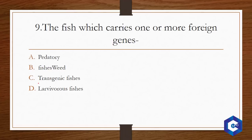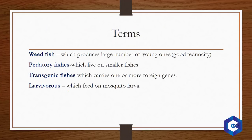A fish which carries one or more foreign genes is called a transgenic fish. Related terms: weed fishes are those which have a high fecundity — meaning they produce a large number of young ones. Predatory fishes are those which live on smaller fishes. Larvivorous fishes are those which feed on mosquito larvae throughout their life.